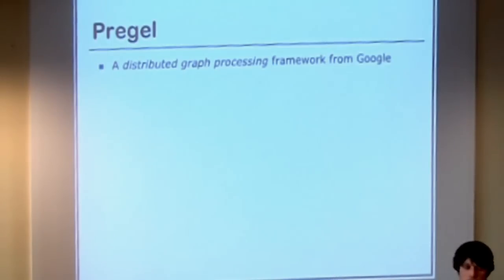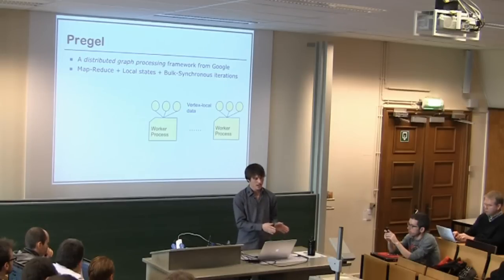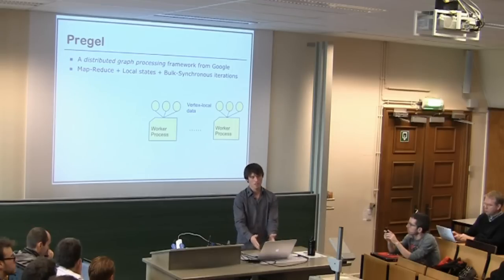So what we need is a distributed runtime framework tailored for graph analysis. And luckily, that was introduced a few years ago by Google. It's called Pregel. It's a distributed graph analysis, graph processing framework. And what it is, basically, it's MapReduce, kind of MapReduce-style programming with added to that local states. And it has bulk synchronous iterations. So the computation is split into steps, super steps, they're called. And they're bulk synchronous. So everything you do in super step n arrives in super step n plus 1.